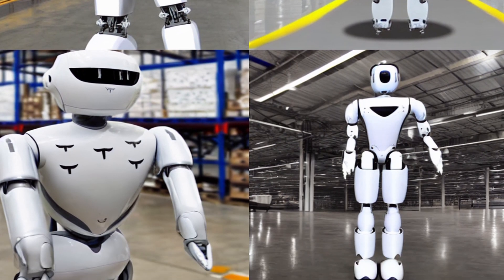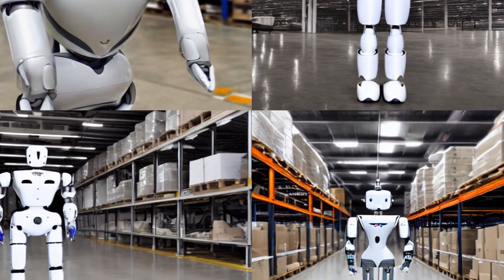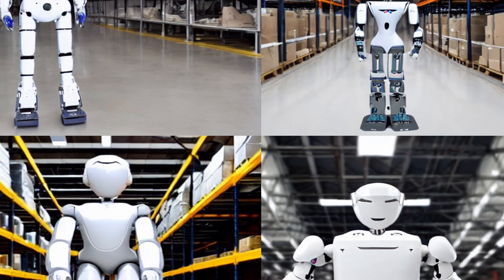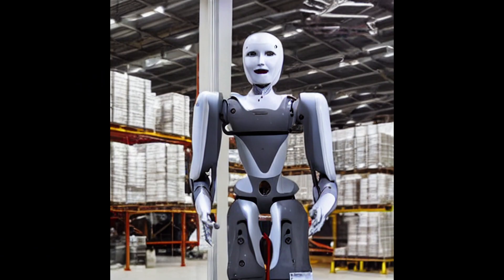Elon Musk expounded on safety by saying the robot was being designed in such a way that it is at a mechanical and physical level of power and speed that you can easily run away from, making it easy to overwhelm if necessary.